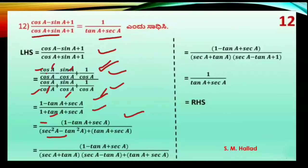1 is sec²θ minus tan²θ. This is a² minus b², which factors as a plus b into a minus b. So this becomes 1 plus tan, into the other factor.